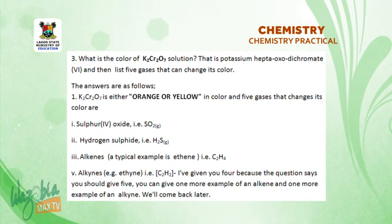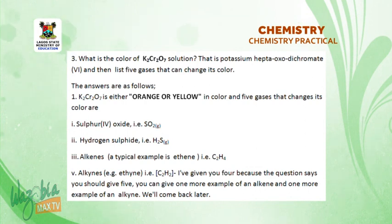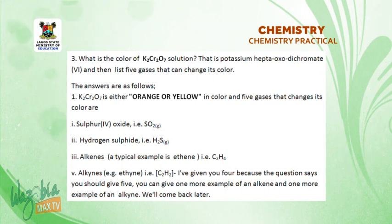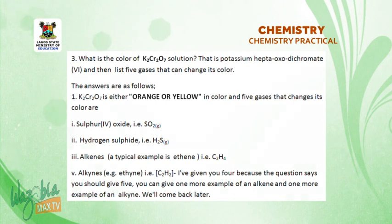Five gases that change its color are: number one, sulfur(IV) oxide, that is SO₂ gas; number two, hydrogen sulfide gas, that is H₂S; number three, alkene — a typical example is ethene, that is C₂H₄; and number four, alkynes — a typical example is ethyne, that is C₂H₂. I've given you four. Because the question says you should give five, you can give one more example of an alkene or one more example of an alkyne.